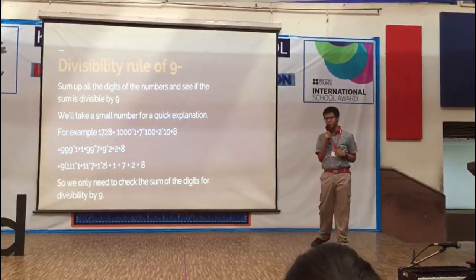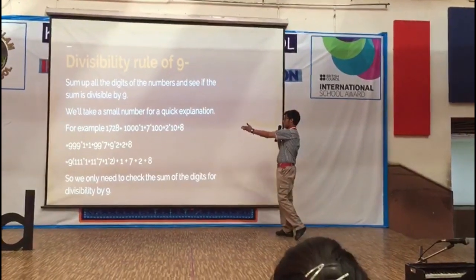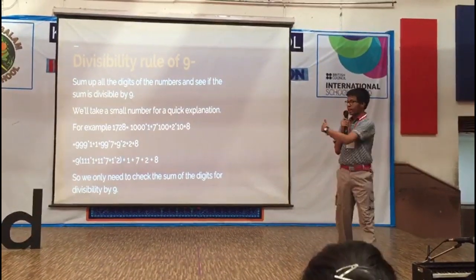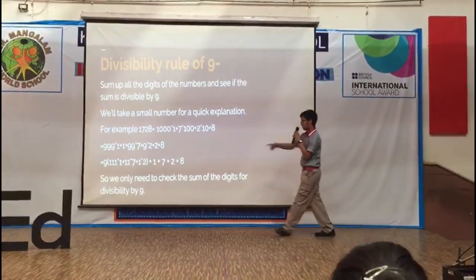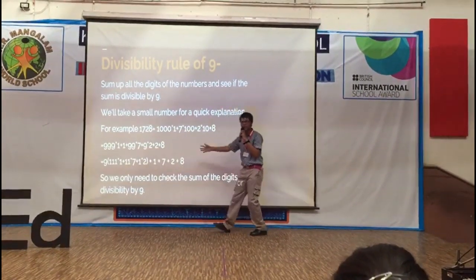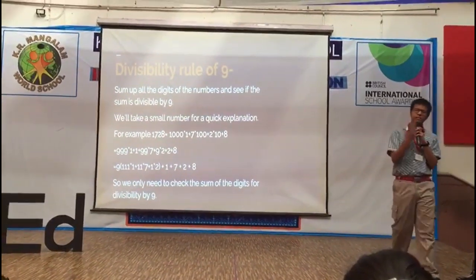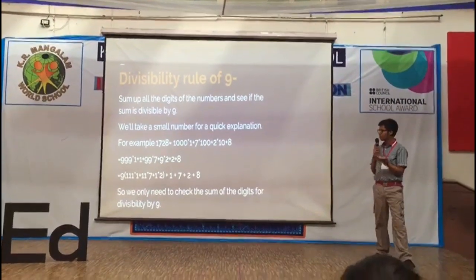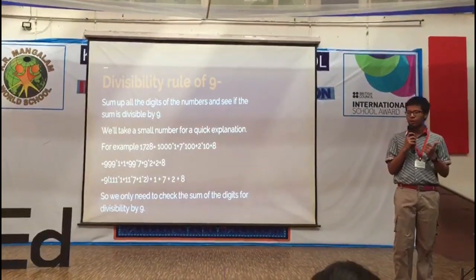You asked about the divisibility rule of 9. It is actually very simple — the rule is the sum of the digits. But how do you know that? It is right here on the board. If you separate the numbers, this part is divisible by 9 and you only have to check the remaining part — so that is 1 plus 7 plus 2 plus 8. A similar result can be found for all divisibility rules. I derived the divisibility rules for all numbers in 5th or 6th grade, and I had a lot of fun doing it.